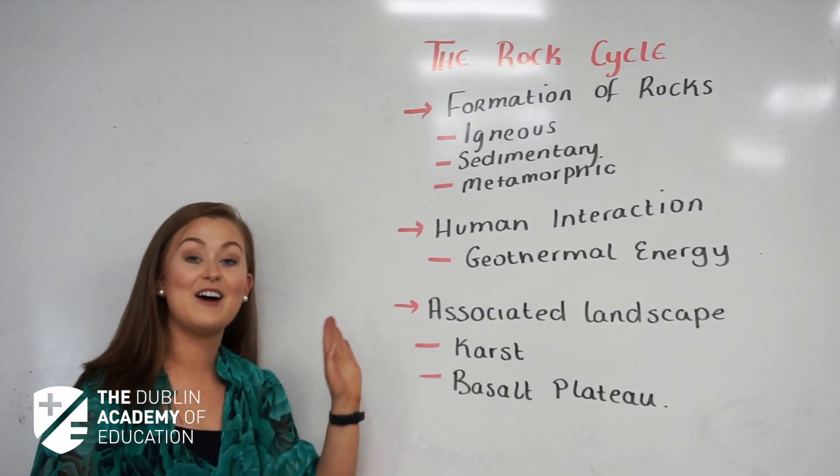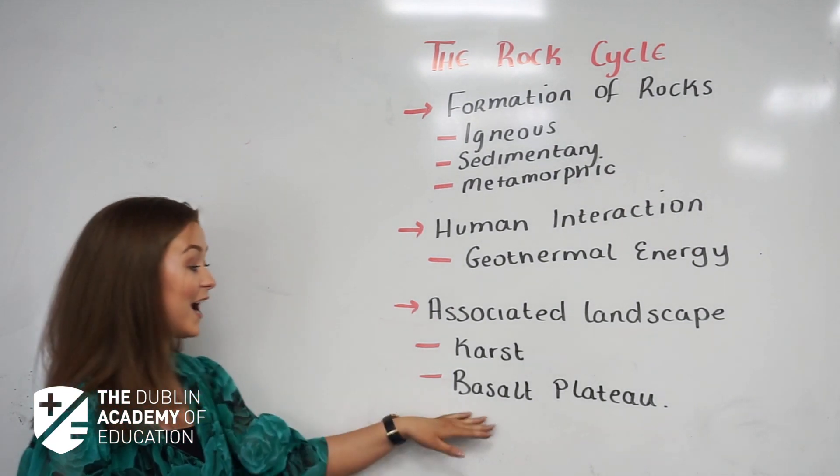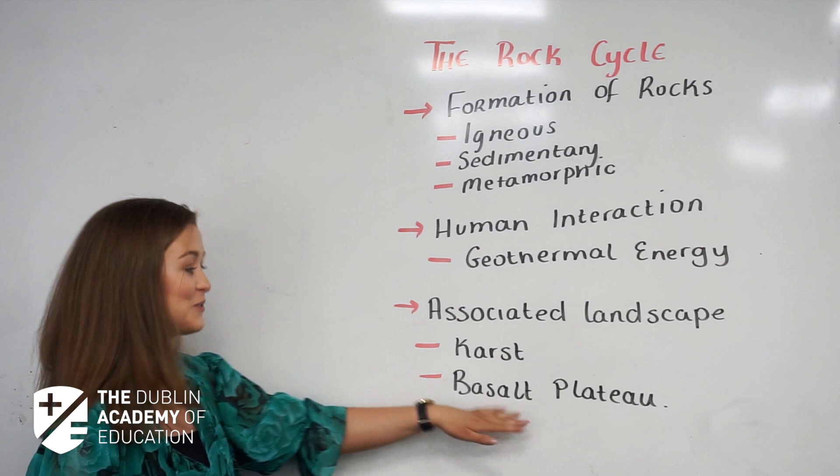Finally, we have our associated landforms. We have our karst landscape, which is just associated with limestone rock, and our basalt plateau, which obviously is associated with basalt rock.